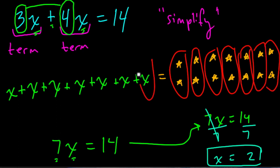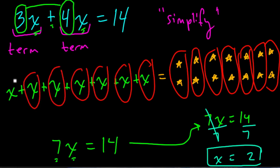And once you do that, once you divide both sides by 7, you can see that each x has 2 stars, or 2 whatever. And this is the basic idea in algebra.